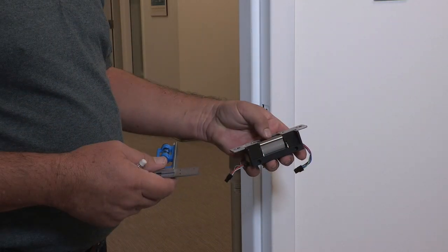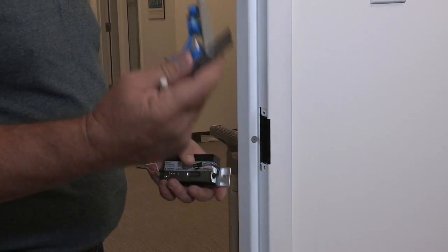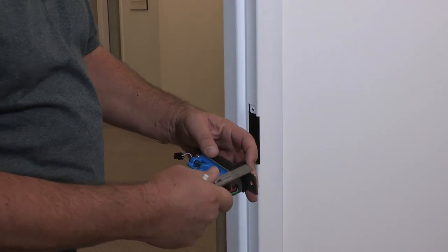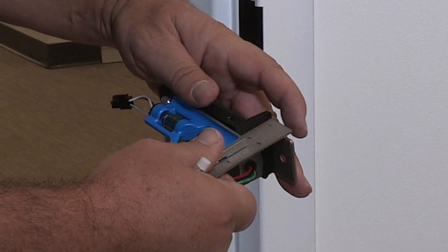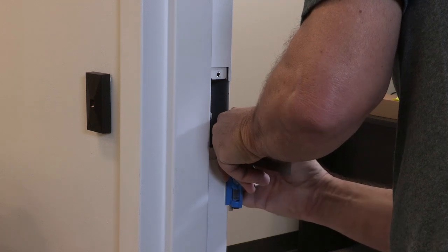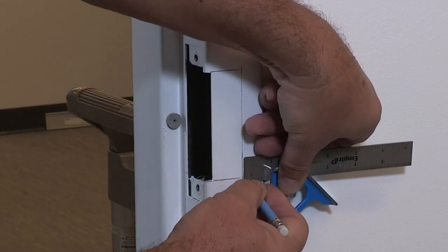Lastly, here's another tried and true method for marking that uses an adjustable T-square. Turn the strike on its side and adjust the T-square to be the depth of the strike. Then transfer the T-square to the door and mark with a pencil.